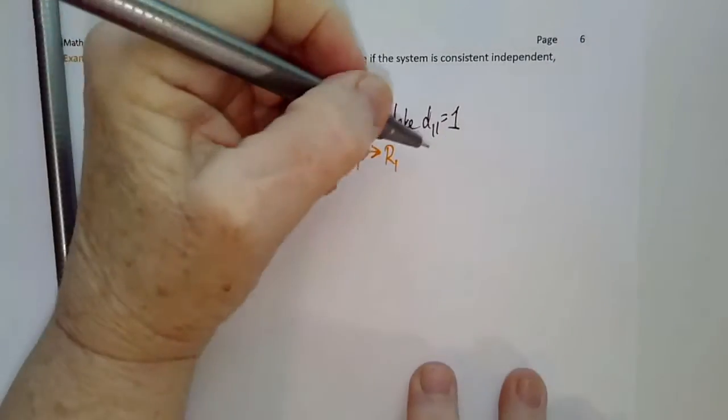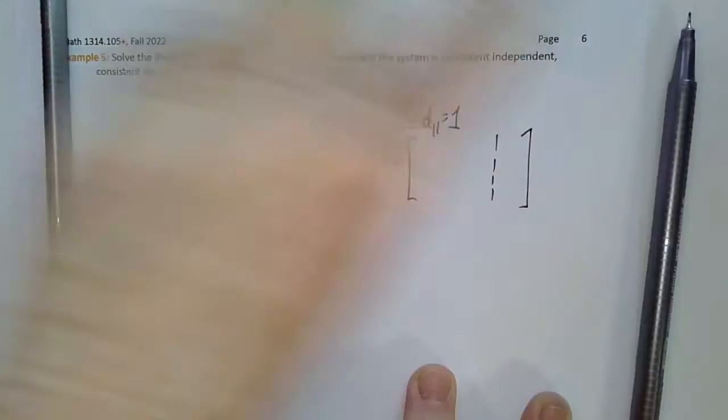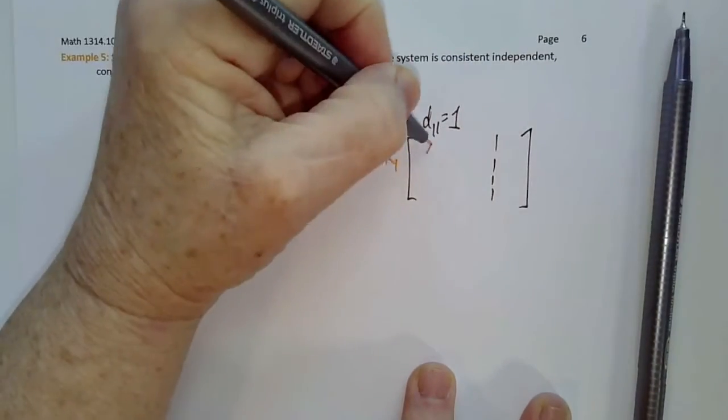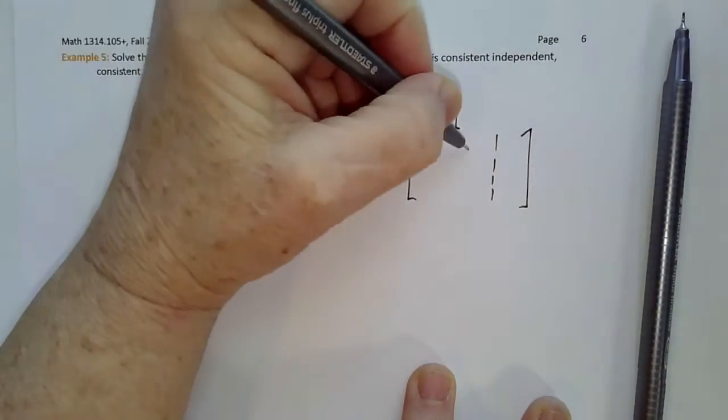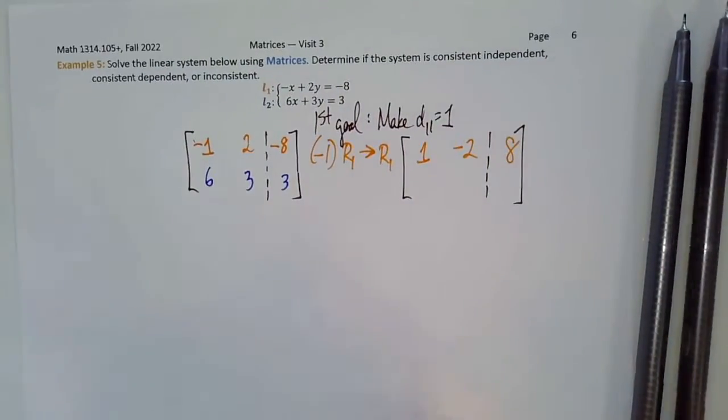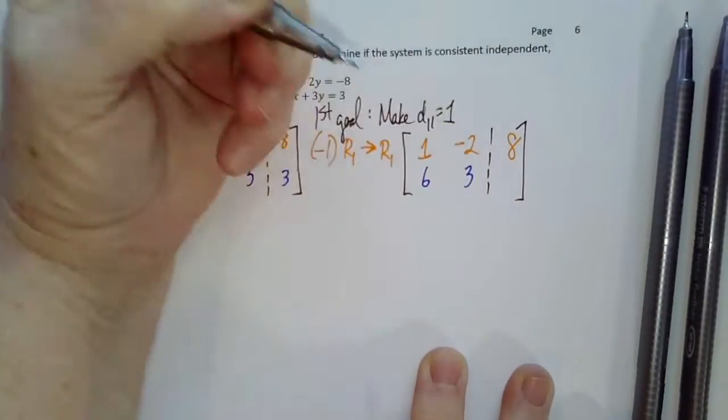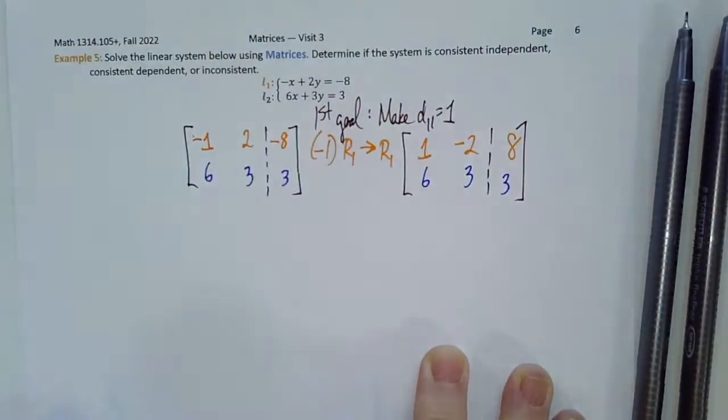Our matrix is new now: 1, negative 2, positive 8, and we still have 6, 3, 3 for row 2.